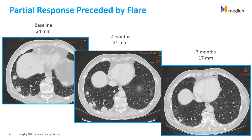Here you can see a partial response case. The tumor size at baseline is 24 mm. After two months, it measures 31 mm. But after three months, its size is only 17 mm. This is typical of a flare or pseudo-progression in immunotherapy.